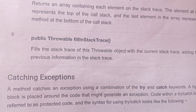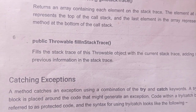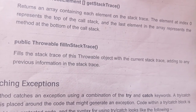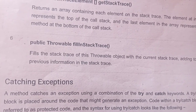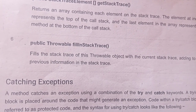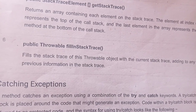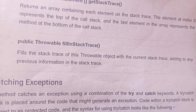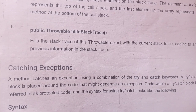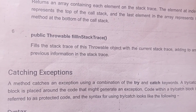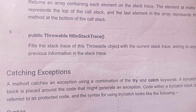Catching exceptions. A method catches an exception using a combination of the try and catch keywords. A try-catch block is placed around the code that might generate an exception. Code within the try-catch block is referred to as protected code. The syntax for using try-catch looks like the following.